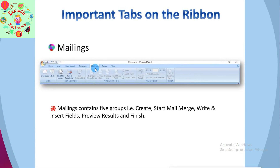The next tab is Mailing. It is the fifth tab in the ribbon and the least often used tab. It allows you to merge emails, write and insert different fields, preview results, and convert a file into PDF format. The Mailing tab has five groups of related commands: Create, Start Mail Merge, Write and Insert Fields, Preview Results, and Finish.